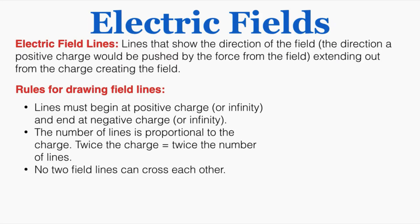The next thing to know about electric fields is electric field lines — lines that show the direction of the field extending out from the charge, in the direction that a positive charge would be pushed. There are specific rules for drawing field lines: lines must begin at a positive charge or infinity and end at a negative charge or infinity; the number of lines is proportional to the charge; and no two field lines can cross each other.